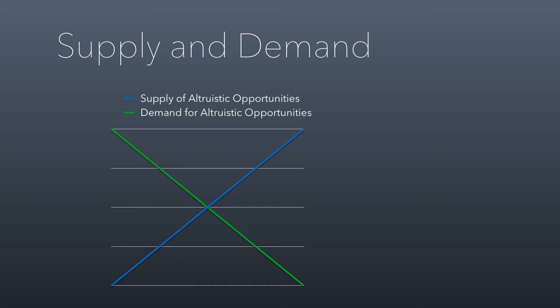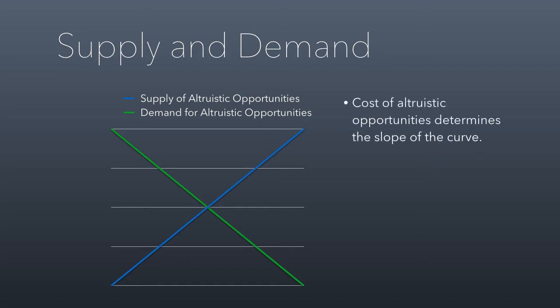For example, with my charity that feeds starving children, if we could feed a child for $10 instead of $20, the idea is more people would be willing to pay for that. If this model holds true, there are some interesting observations. Just like any supply curve, the cost of the opportunities determines the slope. It also means there's always unmet demand — there are always people willing to donate, it's just the price isn't right. The good being accomplished isn't quite cheap enough for them to be willing to donate.